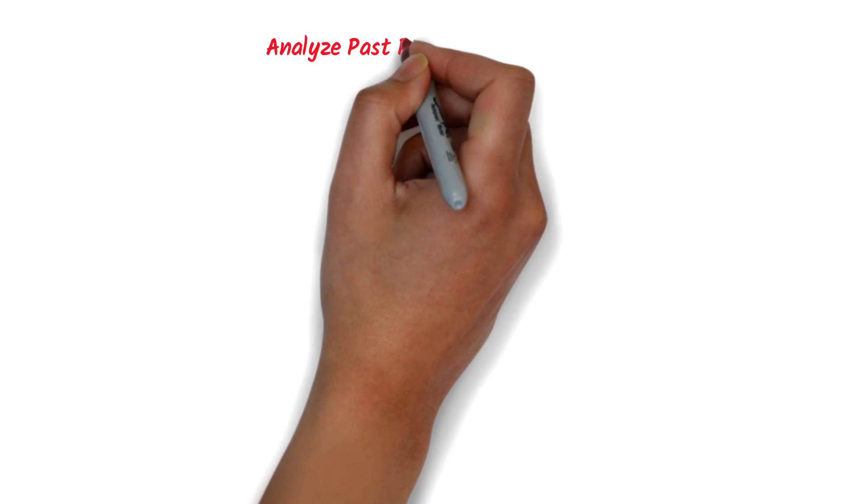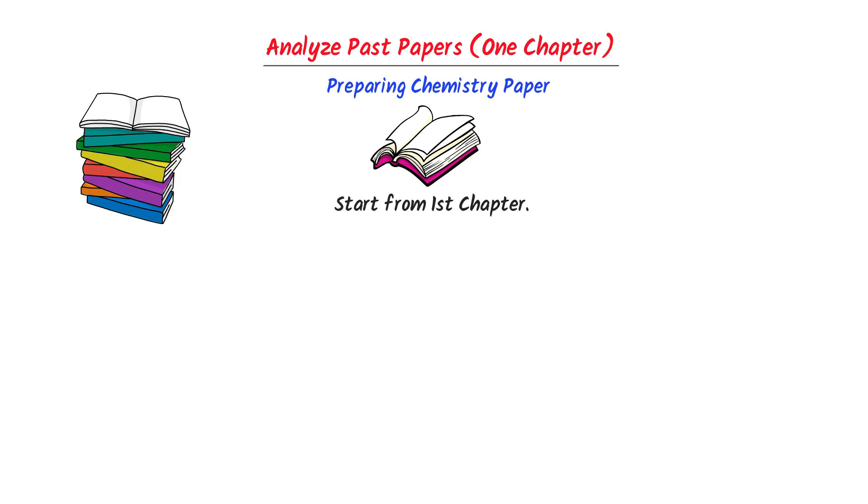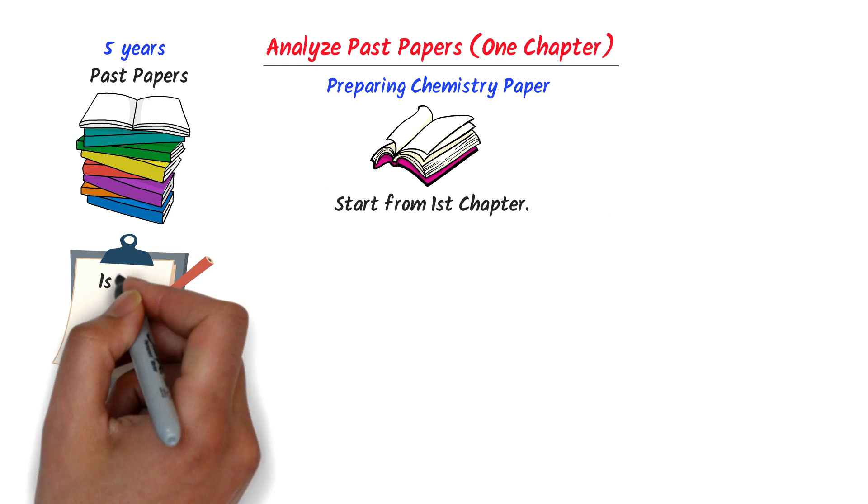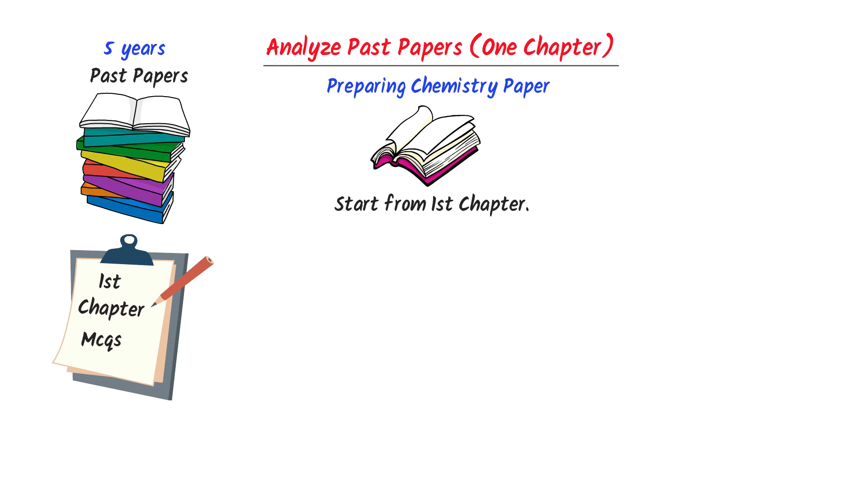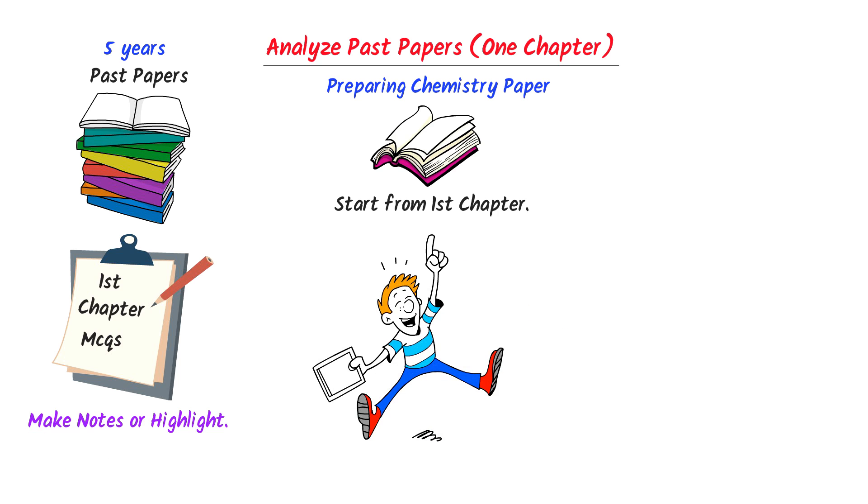The first tip is to analyze past papers for one chapter. For instance, let's consider that I am preparing for chemistry paper. So, I will start from first chapter. Now, I will take the past papers of previous 5 years. Firstly, I will extract all the MCQs of the first chapter from all the past papers, either by making notes or just highlighting them. Once I do this, I will be surprised to see that there are certain MCQs which are repeated every year.